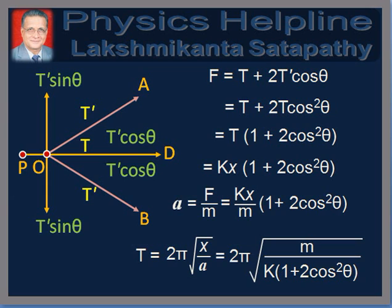Therefore, the net restoring force acting on the body is F equal to T plus 2T dash·cos theta, along PO. Putting T dash equal to T·cos theta, we get F equal to T plus 2T·cos²theta, which equals T(1 + 2cos²theta). Putting T equal to KX, we get F equal to KX(1 + 2cos²theta). This is the restoring force acting on the body when it is at P, directed towards the mean position O. This force produces an acceleration given by A equal to F/M equal to (K/M)·X·(1 + 2cos²theta). We observe that acceleration A is directly proportional to displacement X and directed towards the mean position O, hence the oscillations are simple harmonic.